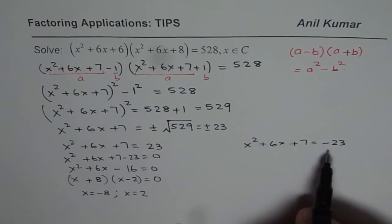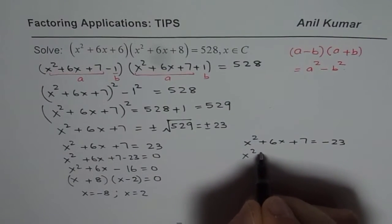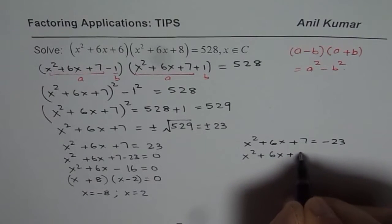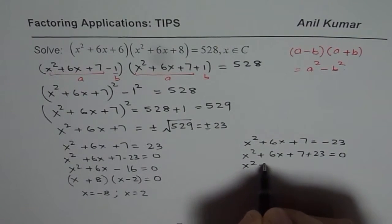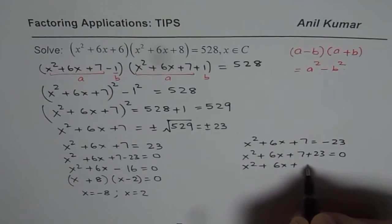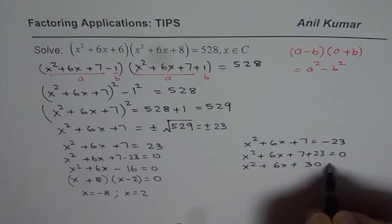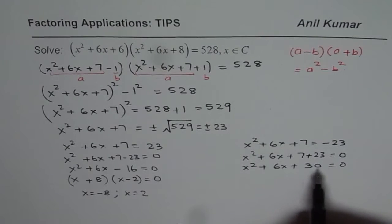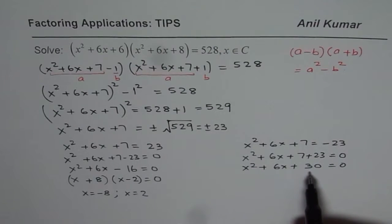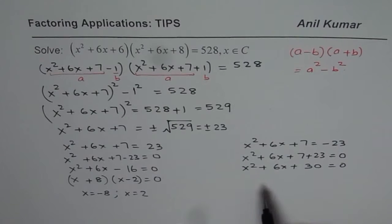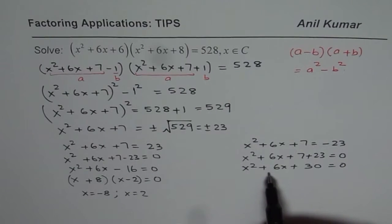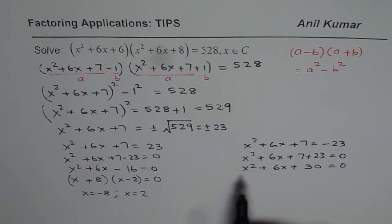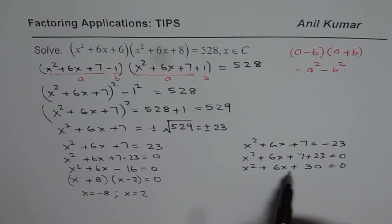Now let us solve the second equation: x squared plus 6x plus 7 plus 23 equals 0, which gives x squared plus 6x plus 30 equals 0. Let us try to factor this. 6 times 5 is 30 but doesn't add to 6; 10 times 3 is 13, doesn't work either. So there is no factorable combination, and we use the quadratic formula.